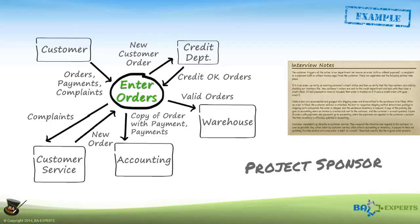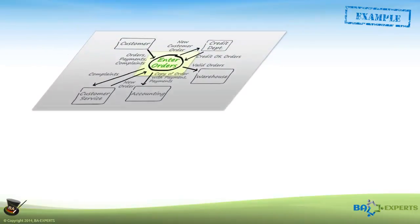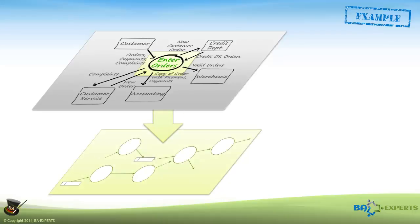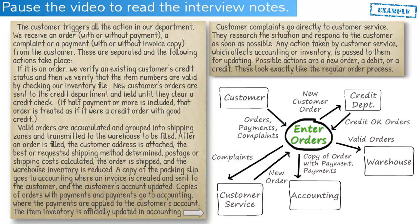At the context level, I only have one process, namely Enter Orders. To understand that process at the appropriate level of detail, I need details — meaning I'm going to look inside the Enter Orders process and define how it currently works in Mary's organization. You may want to pause the video to familiarize yourself with the context level diagram and the interview notes at this time.